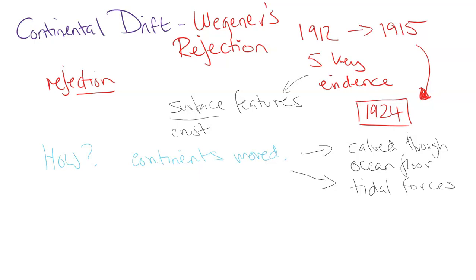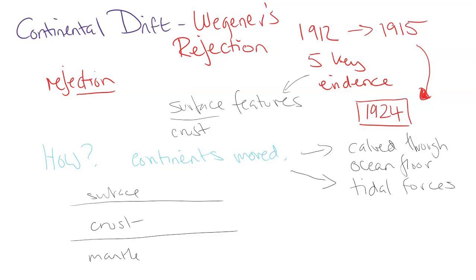His colleagues were unimpressed and not convinced there was enough scientific data — it was all just theory, just thinking out loud. What they couldn't understand was what was below the surface: the crust, then the mantle, with the Moho separating them. They couldn't really understand what happens in the mantle.